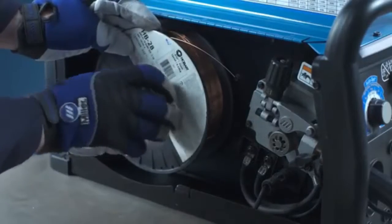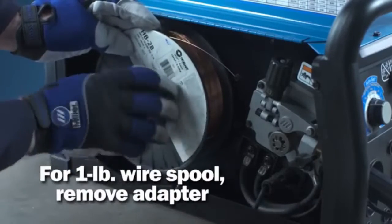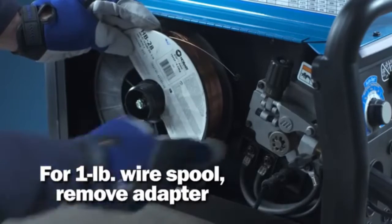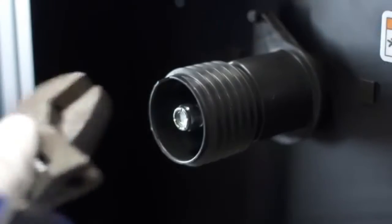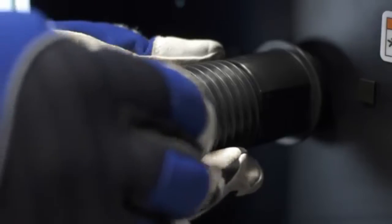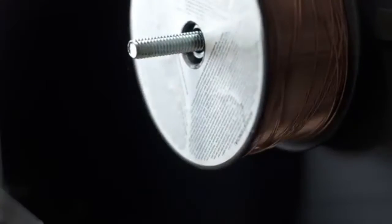Miller recommends a 10-pound spool of Hobart wire to best meet your welding needs, but if you prefer to use the included 1-pound spool, you'll need to remove the spool adapter. To remove the adapter, remove the tension nut inside the adapter. Then pull the spring and washer out with the adapter. Install the spool and then replace the washer, spring and nut in that order.